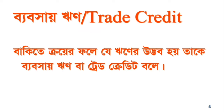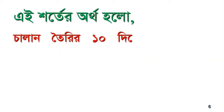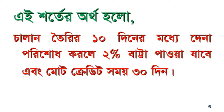The mean of 2/10 net 30 is: if you sit in the right position and pay within 10 days, you will get a 2% discount. The term 2/10/9/30 means that if payment is made within 10 days, a 2% discount will be received.